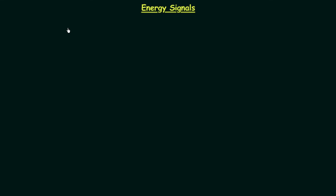In the previous lecture we derived the formula for the total energy and the formula for average power. Now in this lecture we will understand what energy signals are. This is one important topic in this course. A signal is said to be an energy signal if and only if its total energy is equal to some finite value. This is the condition for a signal to be an energy signal.